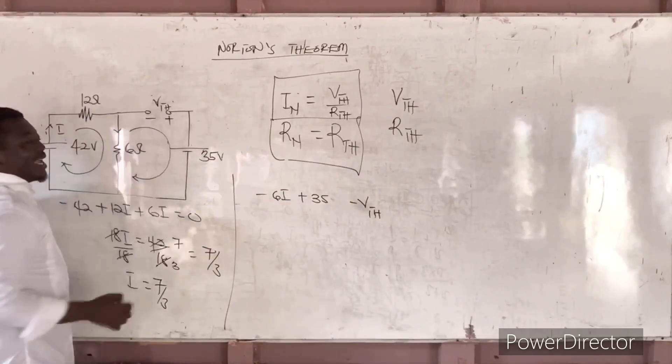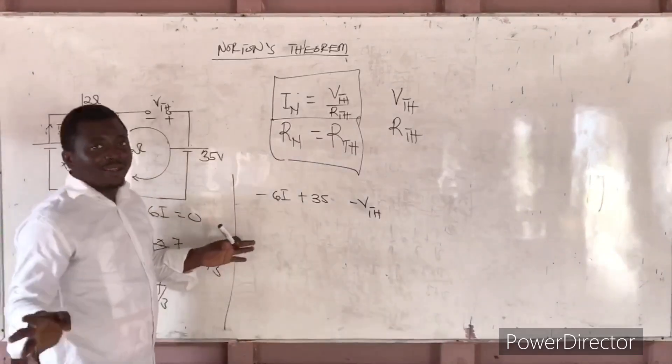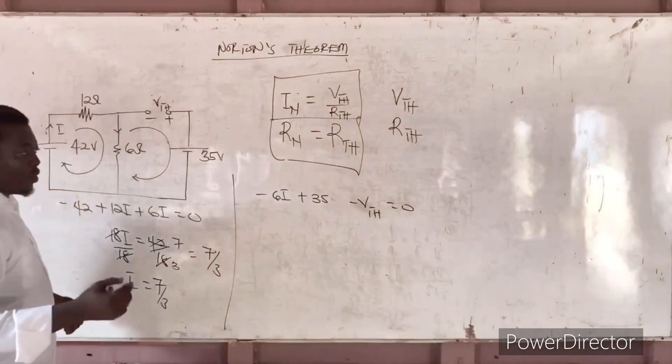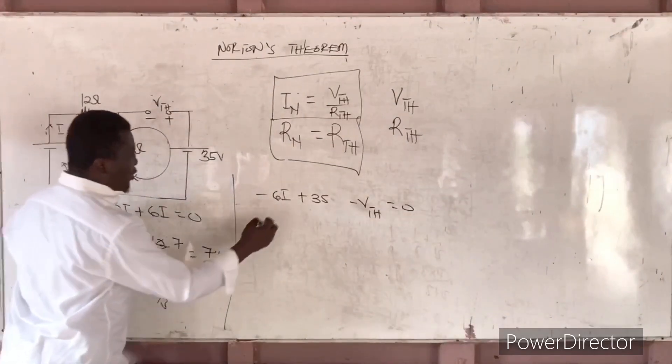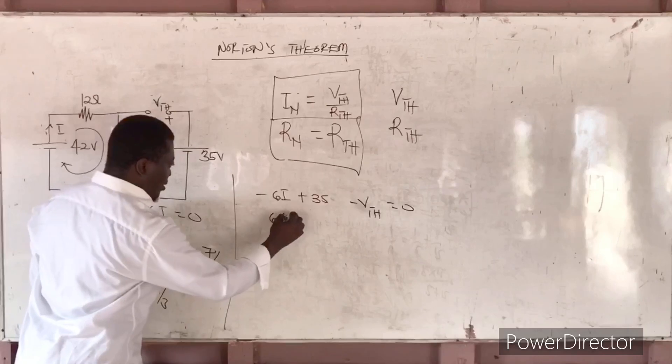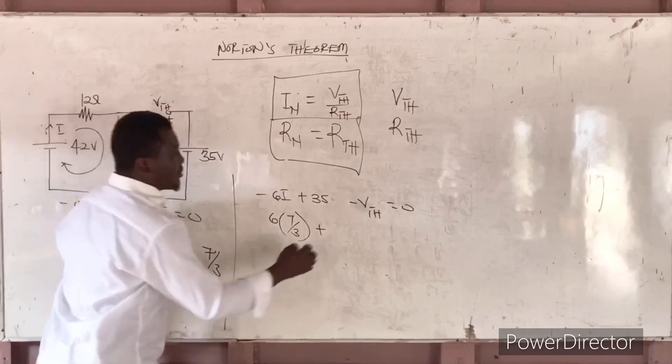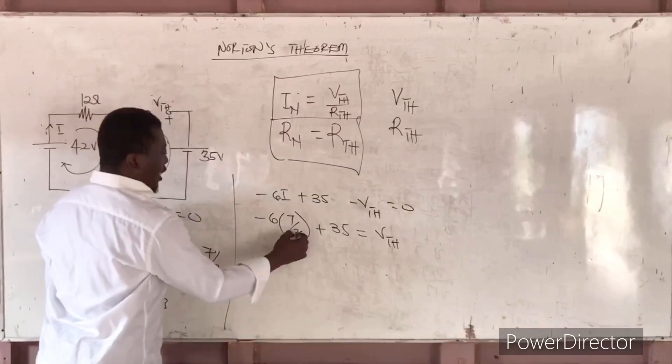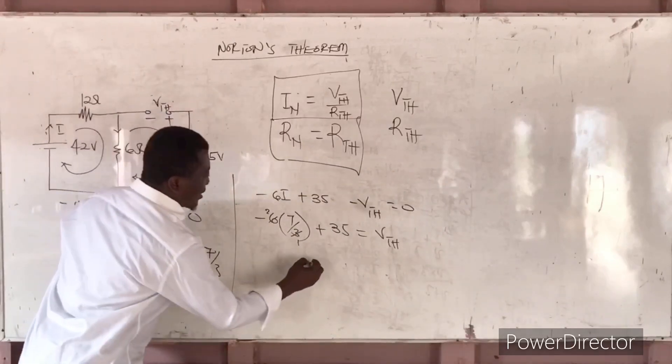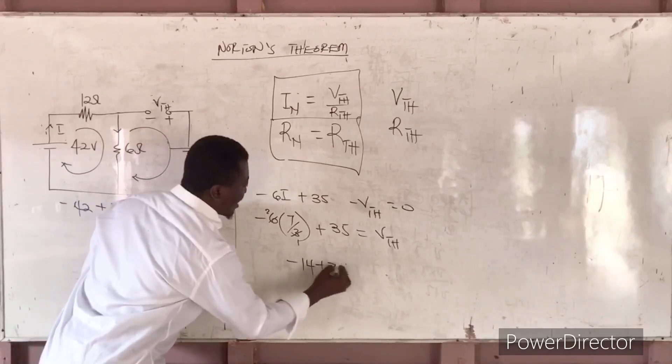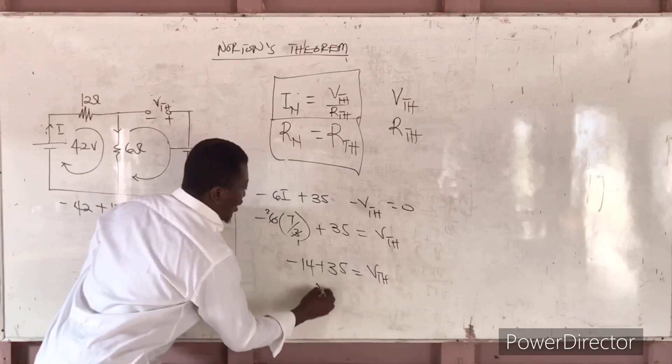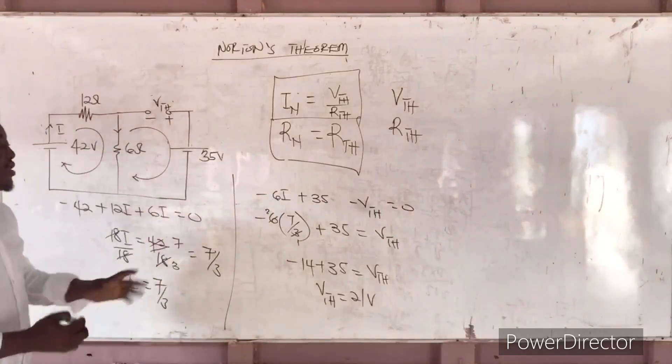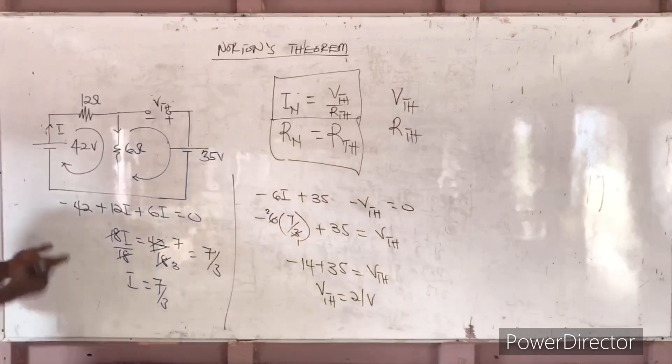Or let it be minus VTH, it doesn't matter. If I bring here minus, here plus, that one is my choice. So if you do plus, it doesn't mean your own is wrong, it depends on our choice. So everything has equal to 0. So turning VTH here, I'm putting I inside, you get 6 times 7 over 3 plus 35 is equal to VTH. 3 and 1, 3 and 2, 14. You are getting minus 14 plus 35 is equal to VTH. And your VTH is equal to 21V.